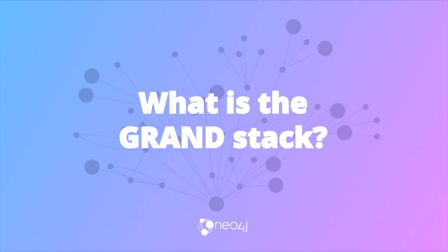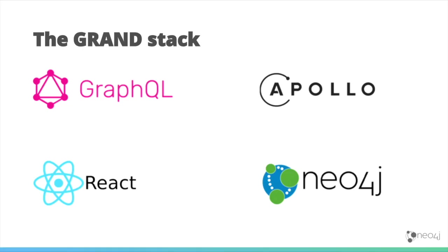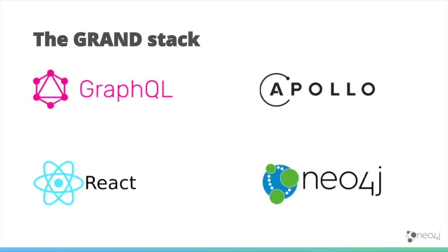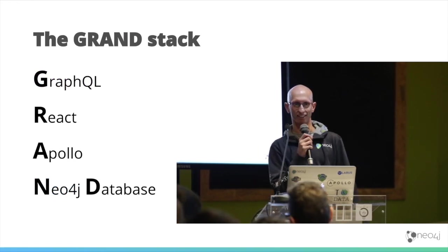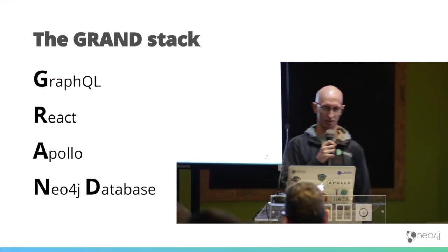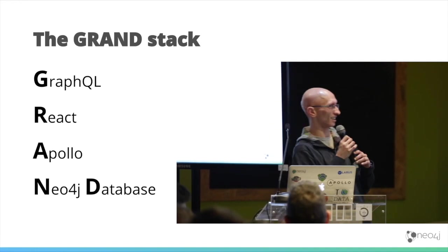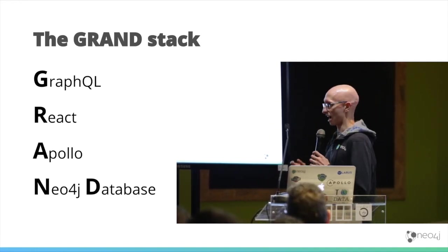Let's start from what this acronym means. This is the stack of tools we're using in this demo — four of them. I imagine at least three you may be familiar with, given we're at a JavaScript meetup. We've got GraphQL, React, Apollo, and then Neo4j Database. The D is for Database. The idea is that you can build applications using all four of these things, and hopefully it should be easier than coupling something together without these components.